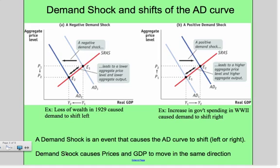Keep in mind, demand shocks cause prices, so price level and GDP, to move in the same direction. You can see here that we have movements when this went down, this went down as well. And when price went up here, output went up as well.